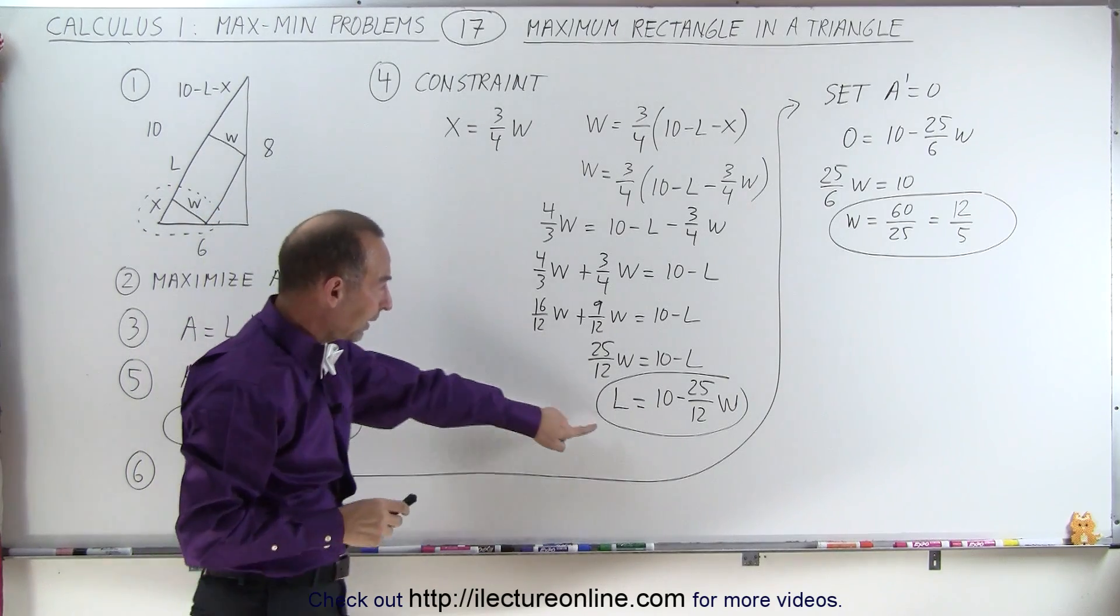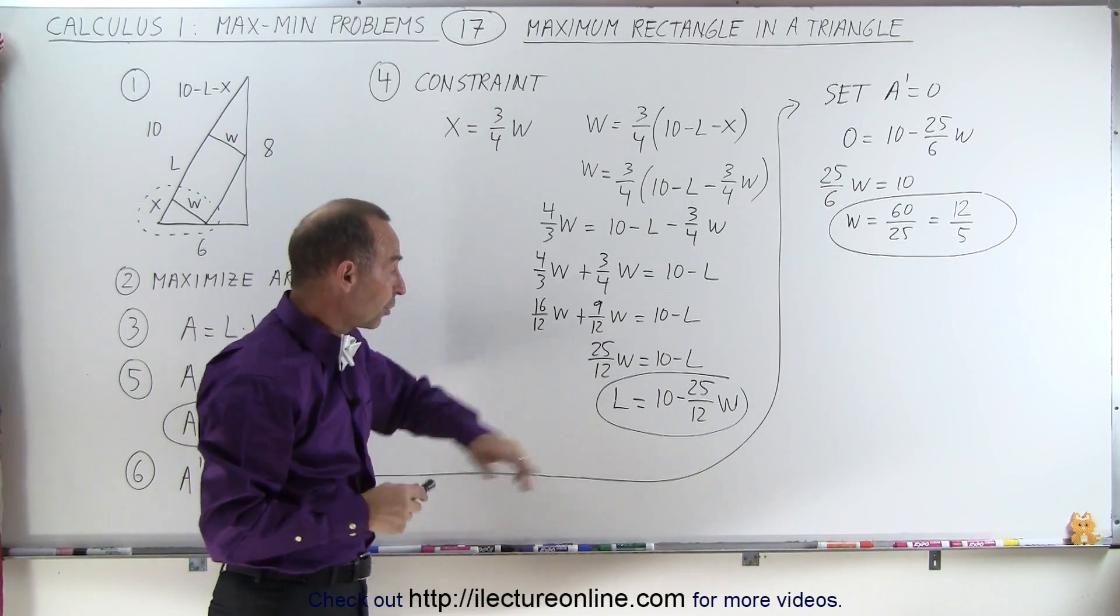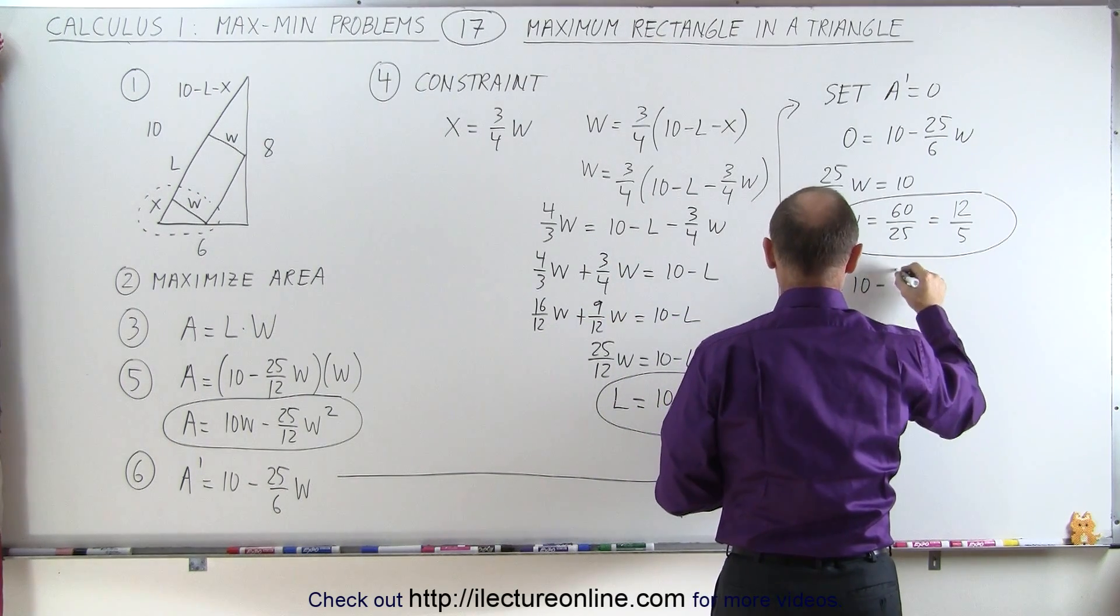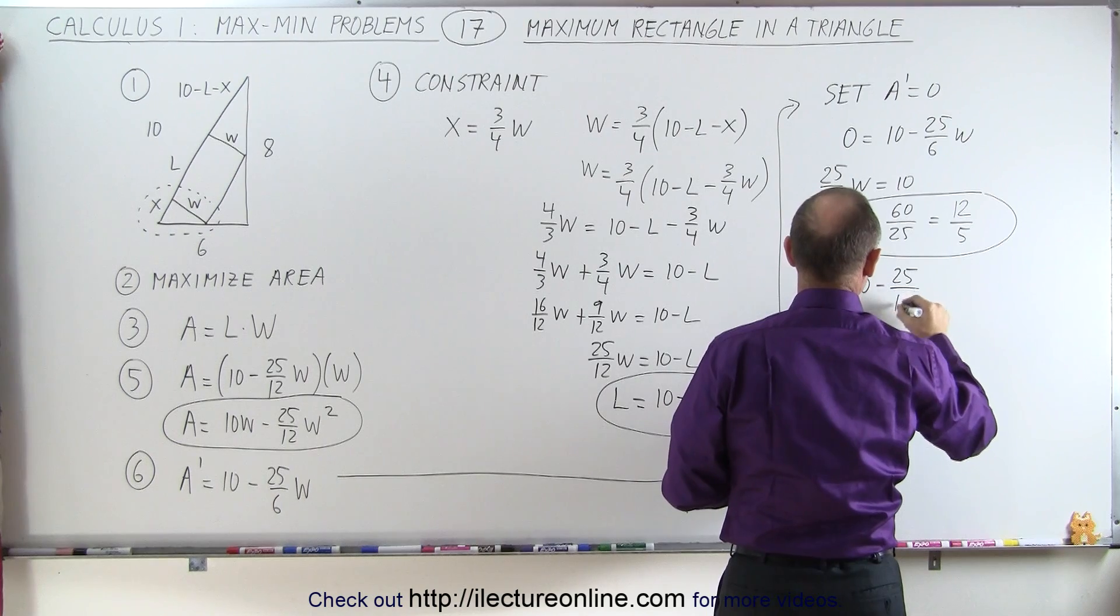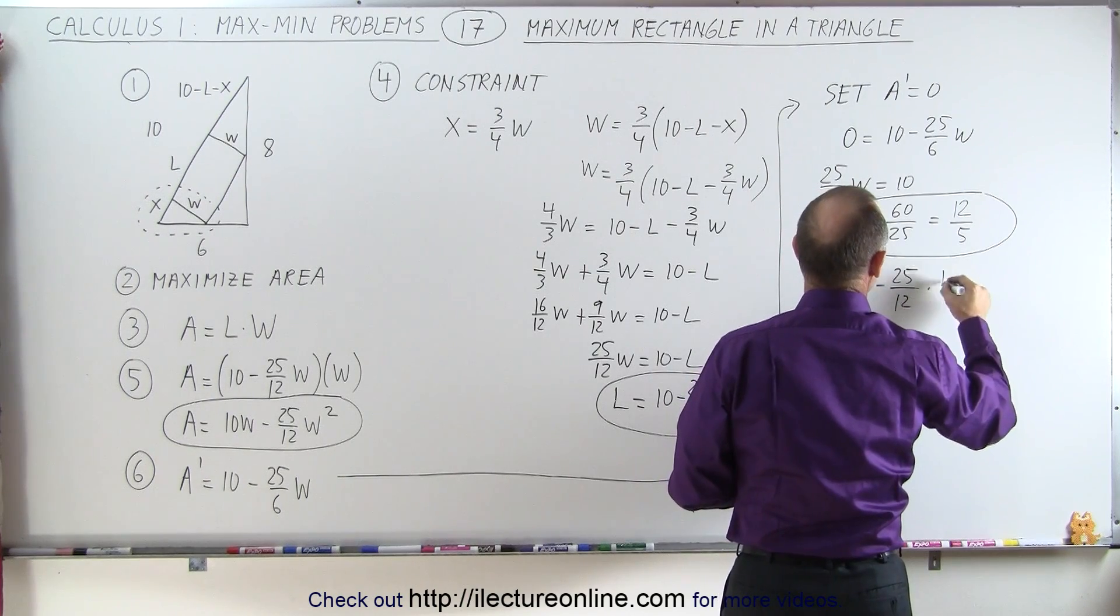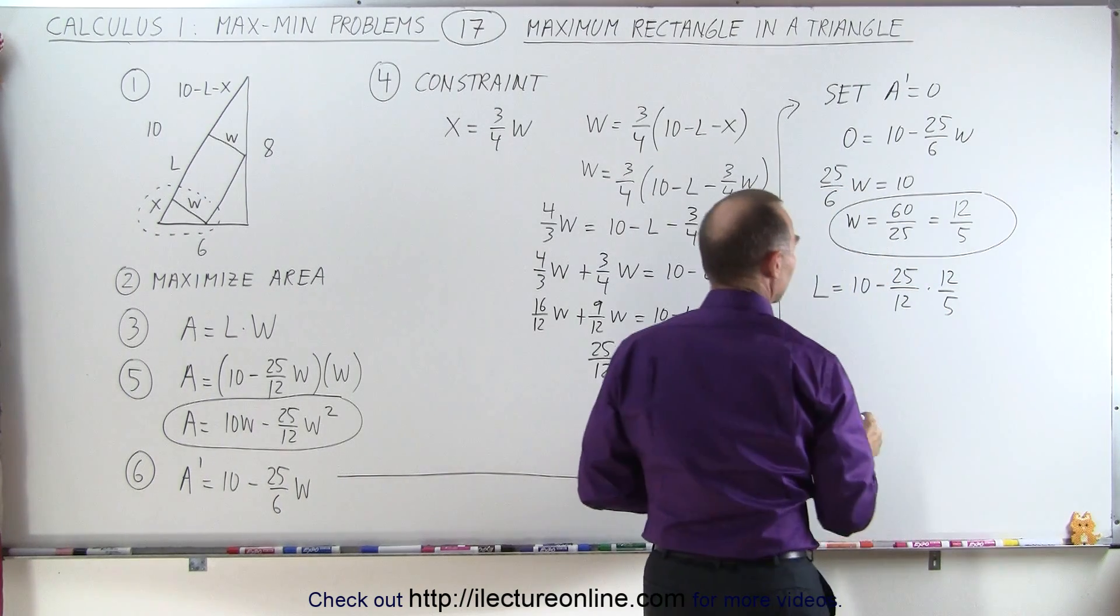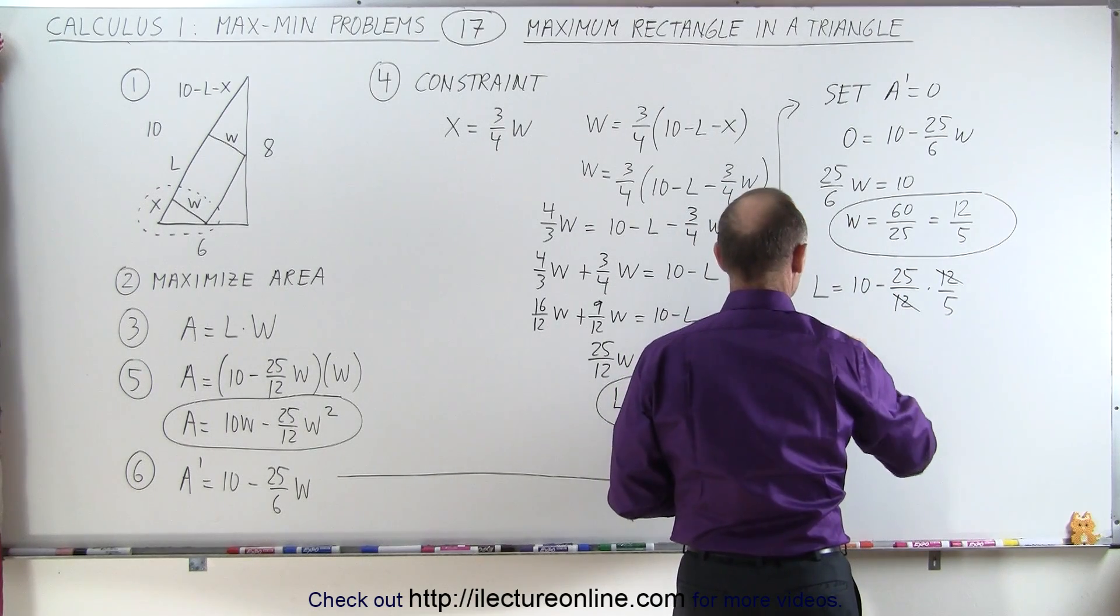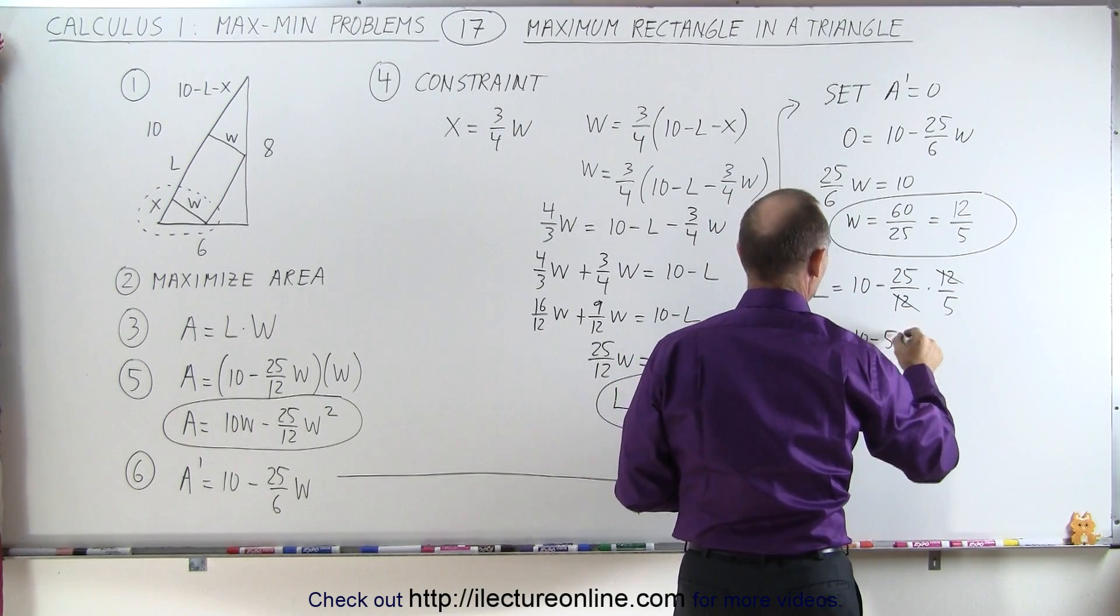Now when we plug that into the equation over here, we can solve for the length of the rectangle. So we get length is equal to 10 minus 25 over 12 times 12 over 5. See that the 12s cancel out. 25 divided by 5 is 5. So length equals 10 minus 5.